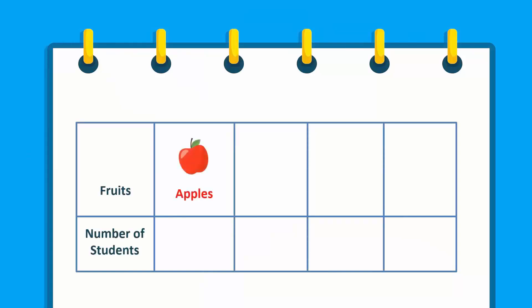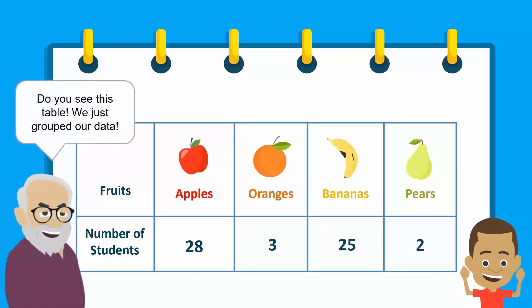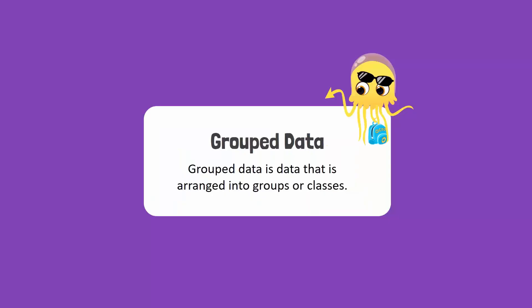If we count the number of students who say they like apples, we can see there are 28. Let's write that down here. Similarly, three students chose oranges, 25 chose bananas, and two chose pears.